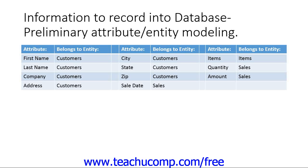Within each table created for each entity, you must only list fields or columns of information which share a one-to-one relationship with the entity or subject of the table. For example, in a customer table, you would want to place the field First Name, assuming that each customer only has a single first name to record. You would not want to place Item into the customer table, as the relationship between the customer and the items purchased in a sale is one-to-many.